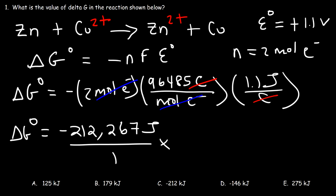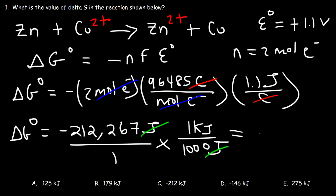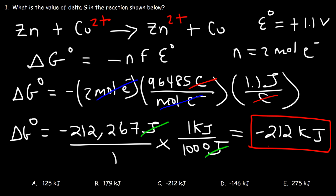Now let's convert that to kilojoules. Dividing by 1,000, this is approximately negative 212.267 kilojoules. So that's the answer for this problem, which corresponds to answer choice C.